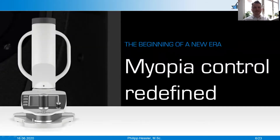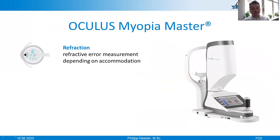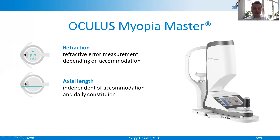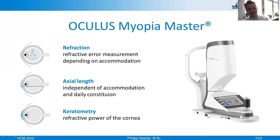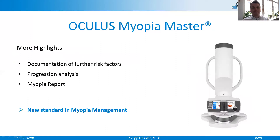After this brief introduction of the basics, I would like to start a new era with you in myopia control and introduce the new Oculus Myopia Master. The Myopia Master is a new standard in myopia control, and it incorporates all FDA-mandated criteria for a complete myopia control — these are refraction that is dependent on accommodation, axial length that is independent of accommodation and daily constitution, and keratometry values to determine the refractive power of the cornea. Oculus has also developed software to document further risk factors and carry out a progression analysis.